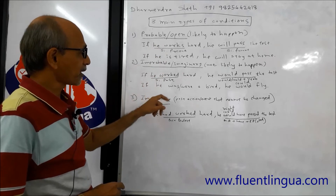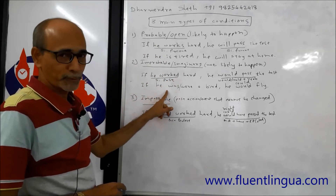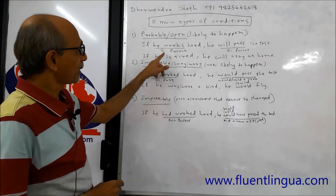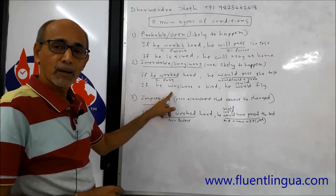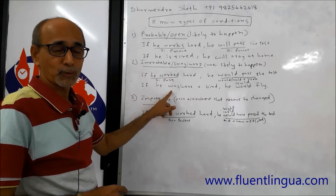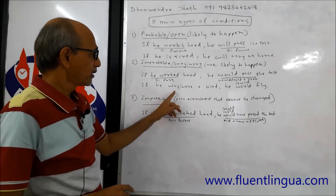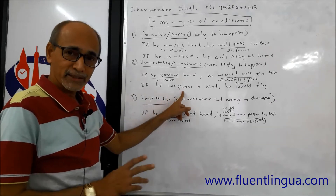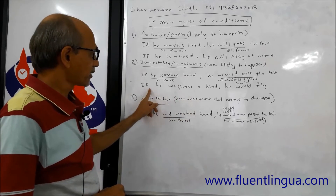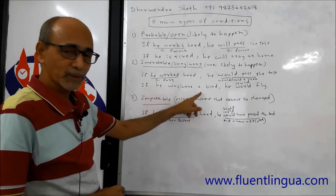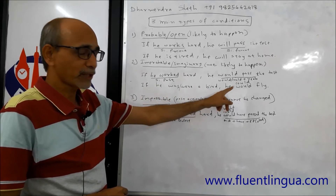The meaning is that we know he is not going to work hard. In this type, when there is no action verb, we use the form of 'to be' — was or were. Both are acceptable: if he was a bird or if he were a bird, he would fly or he could fly.